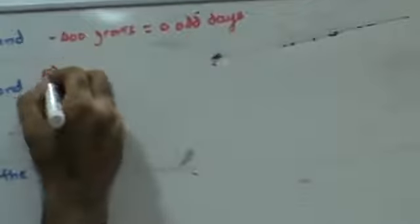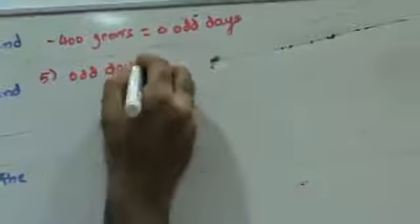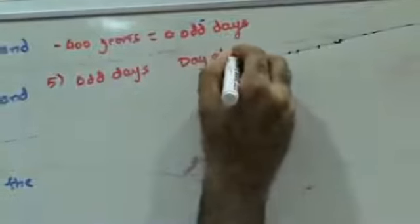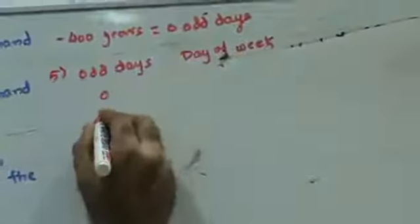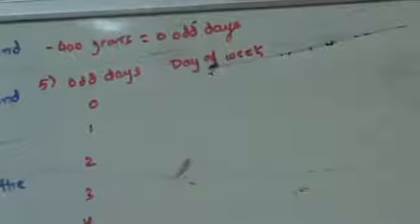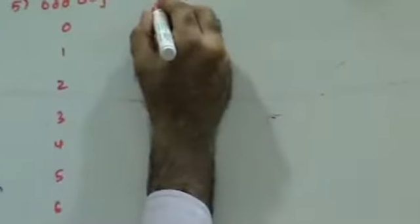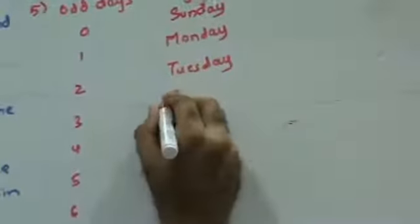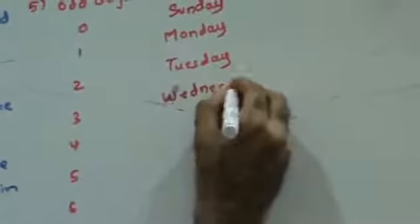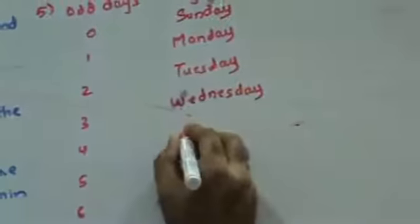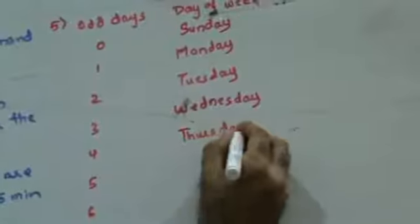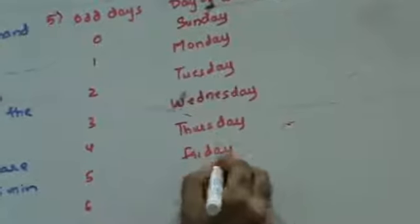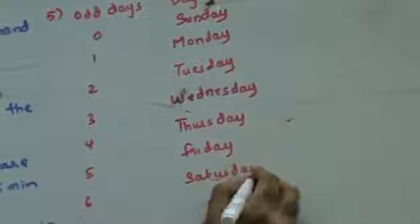Now let's see odd days and the day of the week. Zero odd days corresponds to Sunday, one to Monday, two to Tuesday, three to Wednesday, four to Thursday, five to Friday, six to Saturday.